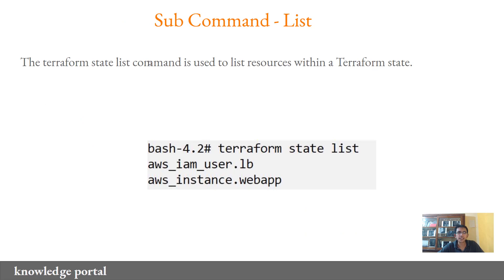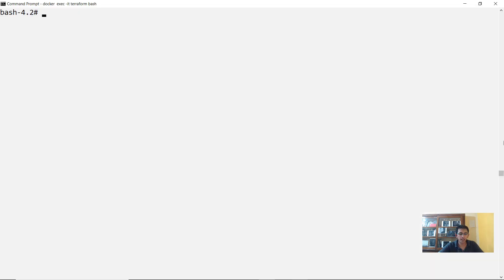The first one is list. The Terraform state list command is used to list the resources that are part of the Terraform state file. Running this command shows you all the resources in that state file. Currently in my CLI, there is one TF file available and the name is state-management.tf.